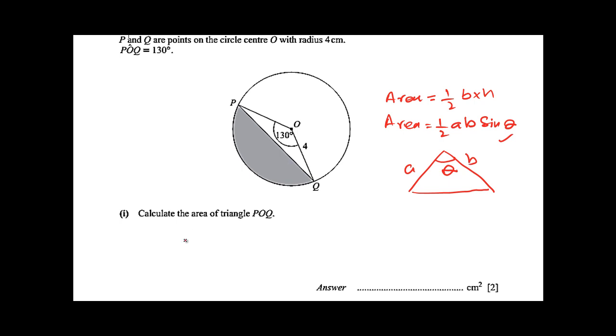In this question, you will apply 1 over 2 ab sin θ because you have radius 4, this side is also 4.